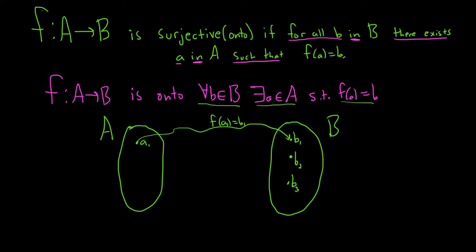Likewise, we have a b2 here. This means that there's some other element here, a sub 2, which maybe takes it there. And then maybe a sub 3, right, and that would maybe go there. Okay, so this is what it means to be surjective. So given any element here, you can find an element here that takes it there. So that's what it means for a function to be surjective.